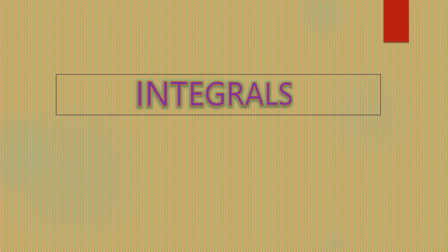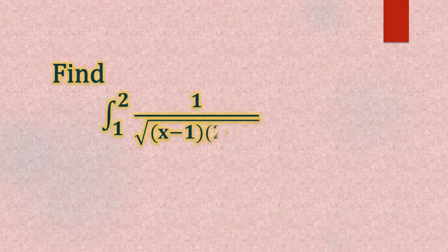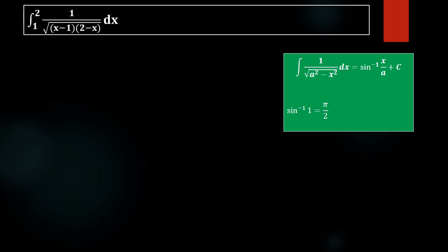Integrals. Find the integral from 1 to 2 of 1 divided by the square root of (x minus 1) into (2 minus x) dx. We have to find the value of this definite integral with limits 1 to 2 of 1 by square root of (x minus 1)(2 minus x) dx.